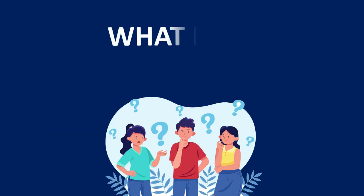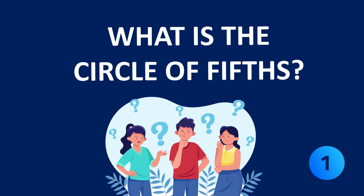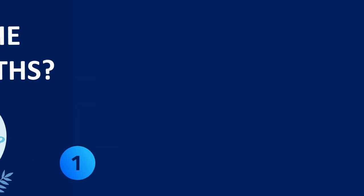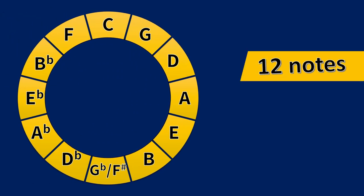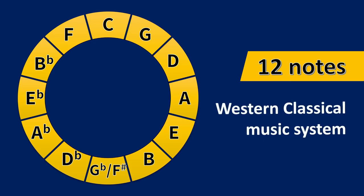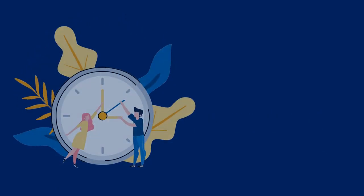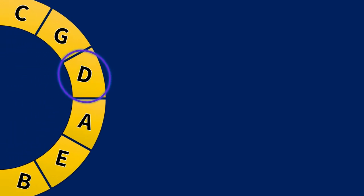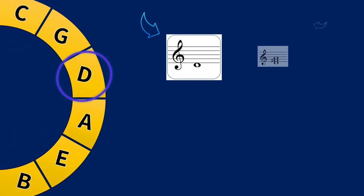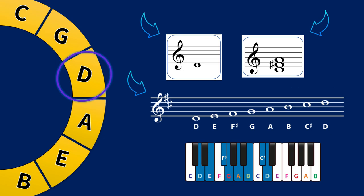What is the circle of fifths? The circle of fifths is a visual music tool that shows the relationship between the 12 notes of the Western classical music system. Its shape reminds us of a clock or a pizza cut in 12 parts. Each spot around the circle of fifths represents a note, a chord, or a major key.